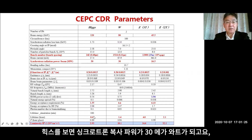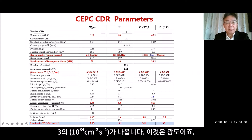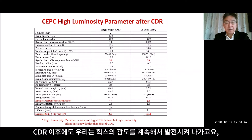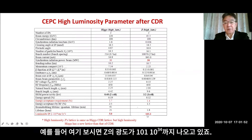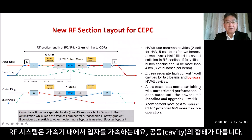Looking at the CDR parameters for the Higgs: with a single beam radiation power of 30 megawatts, we can achieve 3×10^34 cm⁻²s⁻¹ luminosity. After the CDR, we continued to optimize the luminosity at Higgs and Z energies. For example, the luminosity at Z can reach 100×10^34 cm⁻²s⁻¹.